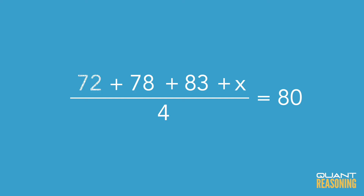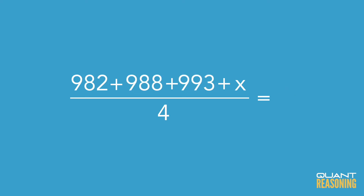For example, changing the numbers to 982, 988, 993 with an average of 990. We're going to see how to use a beautiful reasoning-based solution for this question, and we're going to see that right now.